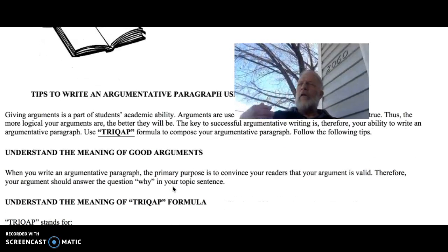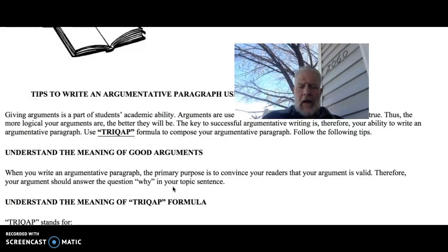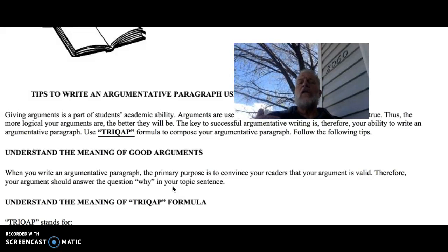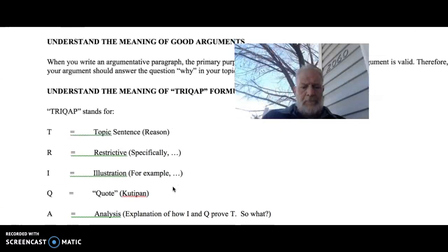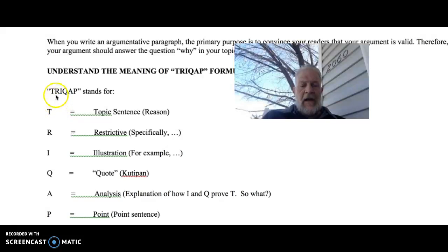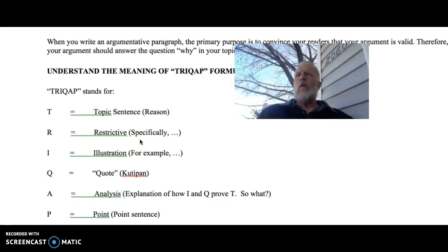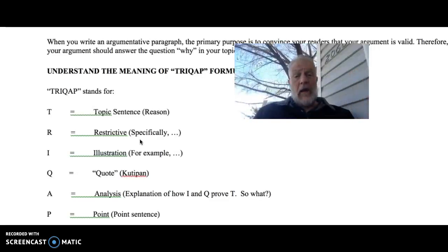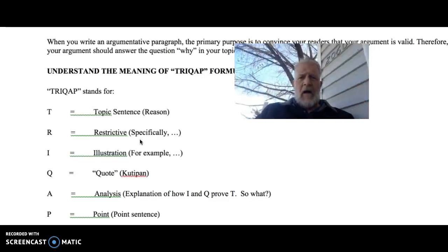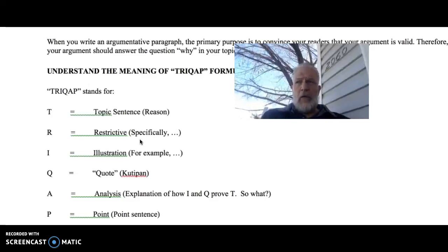Okay, what you're going to do is first understand what a good argument consists of. It's primarily to try to convince your reader that your persuasive argument is valid. Therefore, you need to include the why. You need to make that claim. So here's what these things stand for. For example, TRICAP stands for T, topic sentence, R, it's restrictive. So what you're doing is specifically restricting the scope of your argument so you don't have to argue everything in the world. You just pick a couple of things about the argument that you think would persuade your audience.